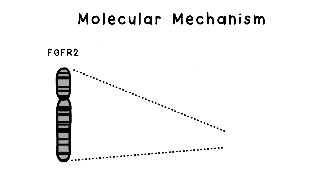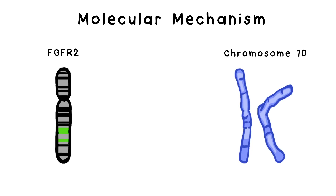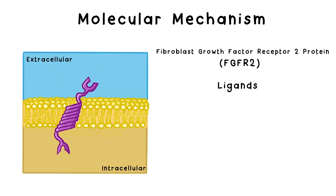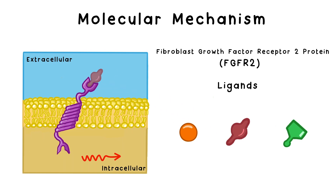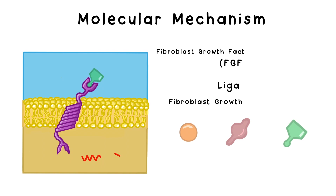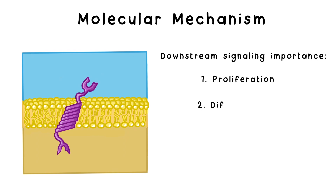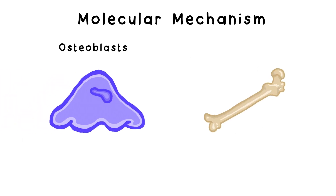FGFR2, a gene on chromosome 10, is the Apert Syndrome gene. To understand why mutations in FGFR2 cause Apert Syndrome, let's first understand the role of FGFR2 in non-disease individuals. The FGFR2 gene codes for the Fibroblast Growth Factor Receptor 2 protein, which is a transmembrane receptor that mediates signal transduction from the extracellular to the intracellular environment. It binds various ligands — molecules bound by a receptor — called Fibroblast Growth Factors. This downstream signaling is important for balancing proliferation, differentiation, and apoptosis of precursor cells like osteoblasts, so that bones are formed in just the right way during development.